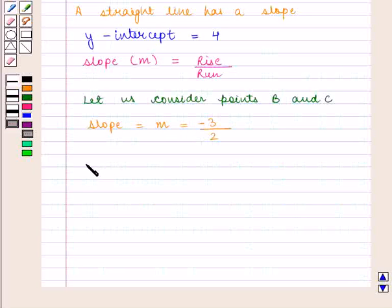So we have got the value of m as minus 3 by 2 and we know the y-intercept which is denoted by c is equal to 4.